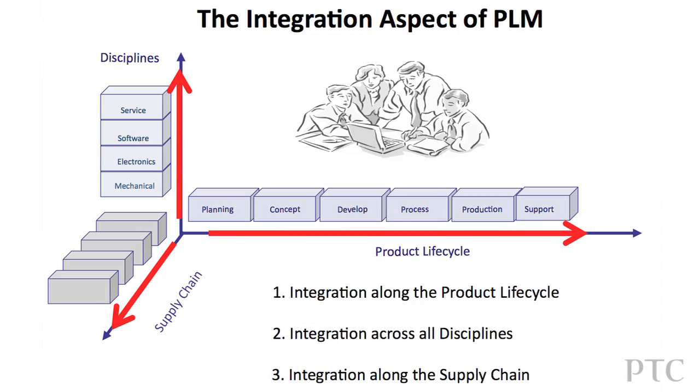We will see in the European market and the international market that service becomes part of the product. And the third axis — the last axis — is the supply chain, or the different organizational units of a company. We have to think about globalization. That means products are built, developed, and sold everywhere, anywhere. And therefore we have to combine these different units inside the enterprise and outside from the supply chain.